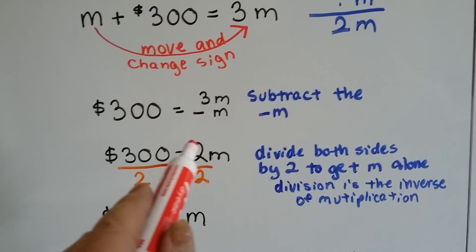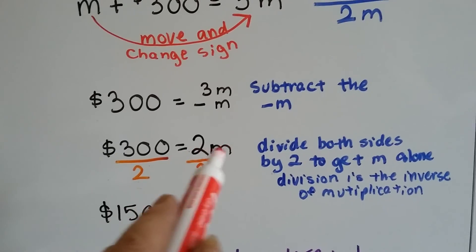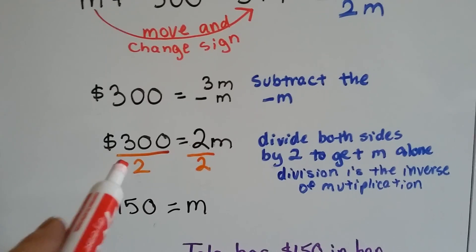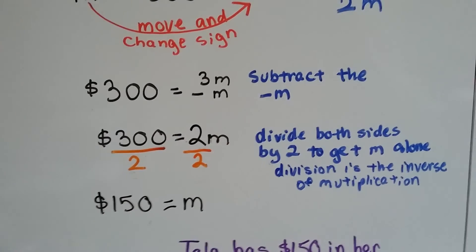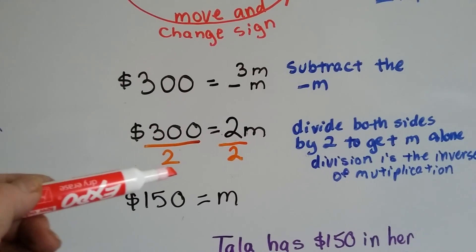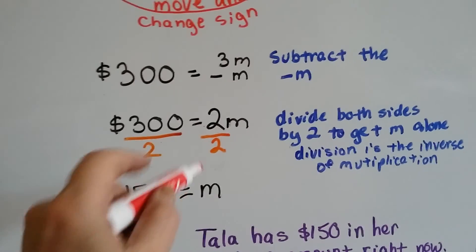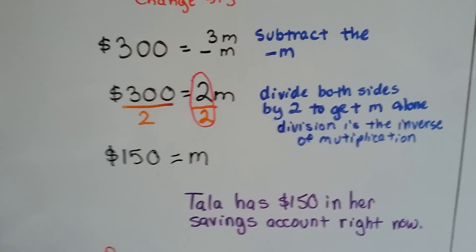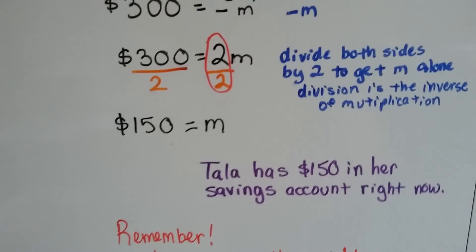Now we have $300 equals 2M. Now because the 2 and the M means multiply 2 times the money now, the opposite of multiplication, the inverse operation, is division. So we need to divide both sides by 2 to get rid of this 2 to get that M by itself. We divide by 2 and we divide by 2 and we get 300 divided by 2 is 150. 2 divided by 2 is a 1. And that puts our invisible 1 in front of the M. So now we have M. So now we know that Tala has $150 in her savings account right now.